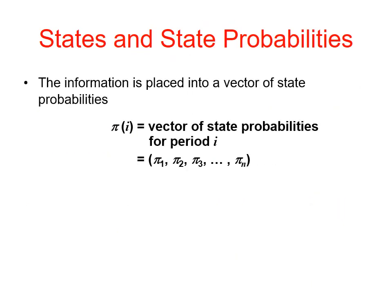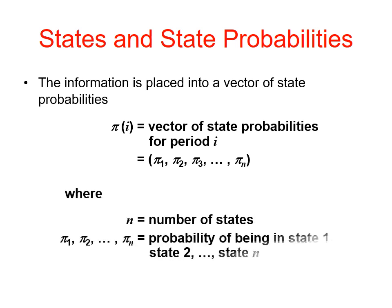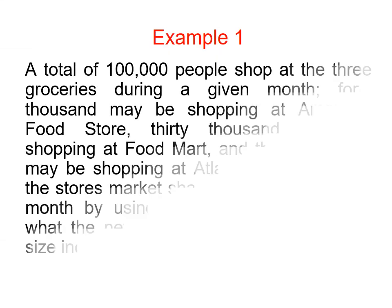Regarding status and state probabilities, the information is placed into a vector of state probability. Vector i means the vector of state probability for period i, which equals vector 1, vector 2, vector 3, until vector n, where n is the number of states. Vector 1, vector 2, through vector n represent the probability of being in state 1, state 2, and so on.